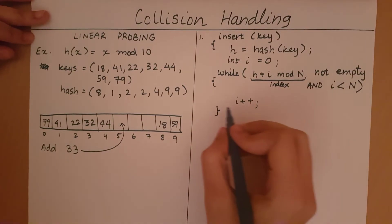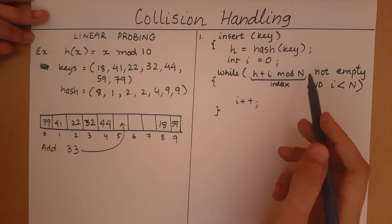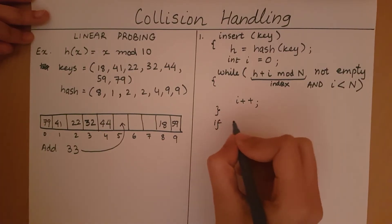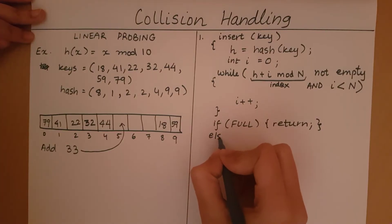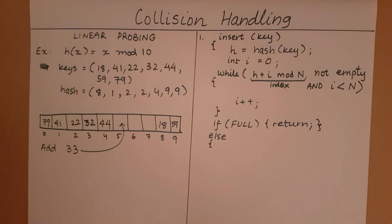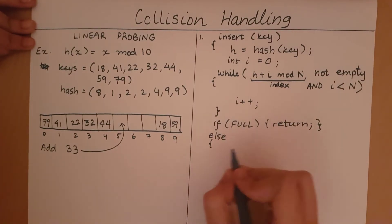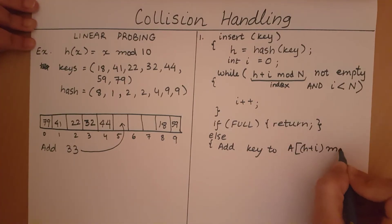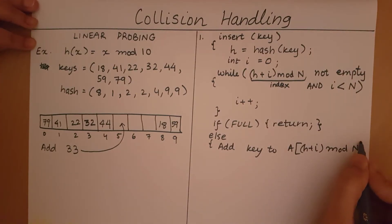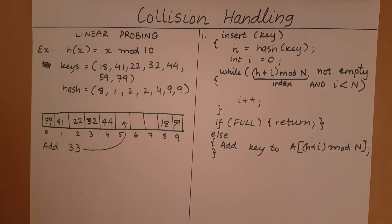After the while loop, either the hash table is full and we exit, or we have found an empty index where we want to add. So if the hash table is full, we return. Otherwise, we add the key into the index (h + i) mod N, because that is the first empty index we find. This is the pseudo code for inserting a key into the hash table. When you write your code, the implementation can differ, but the basic logic has to stay the same.